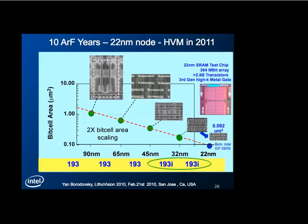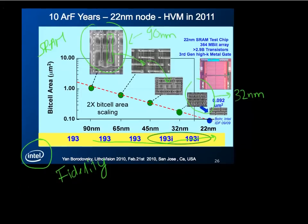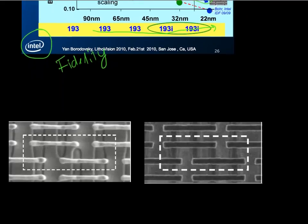Having described some of the basics of double patterning, I wanted to show you the layout of SRAM cells across different technology generations. This one is for a 90 nanometer technology and this one is for a 32 nanometer technology. Surprisingly, the statement made by Intel is that they have been able to improve the fidelity of their lines going forward from each generation — keeping the lithography wavelength the same, the fidelity of the lines in these SRAM cells has actually improved at every generation. That seems to be a very surprising statement. How is that possible?